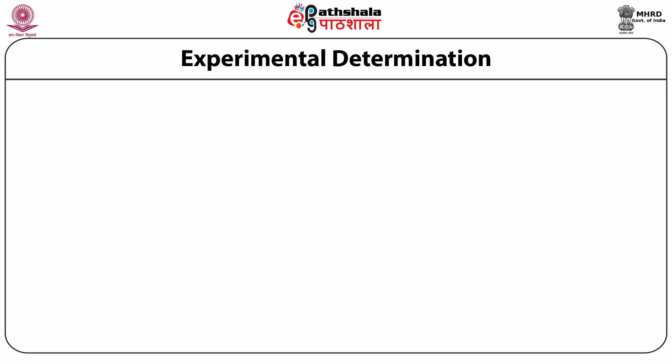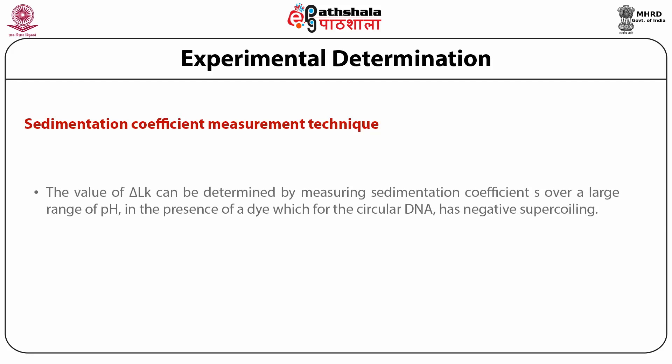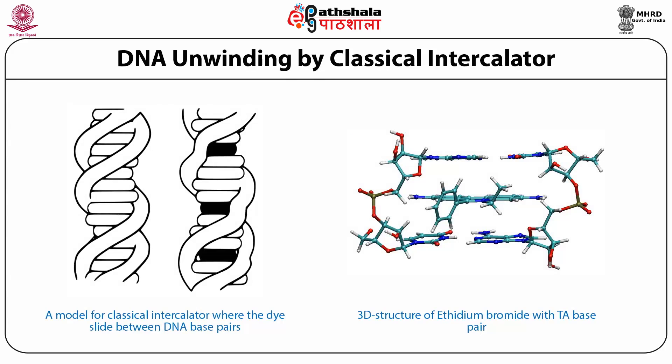Experimental determination of delta LK. Sedimentation coefficient measurement is one of the techniques used. The value of delta LK can be determined by measuring the sedimentation coefficient S over a large range of pH in the presence of a dye, for circular DNA that has negative supercoiling. A typical example is the use of intercalators. We show in this picture DNA unwinding by a classical intercalator.